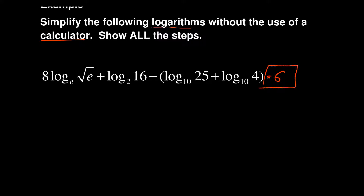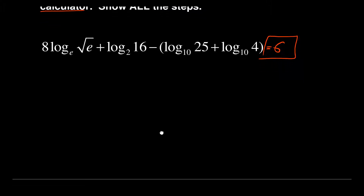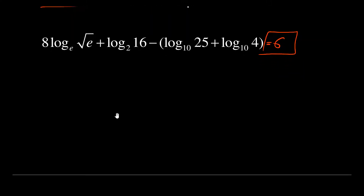So my aim is to get 6. Now let us work through this problem and see how to get that particular answer of 6. I'll start with the first part — the part before the plus sign — which is 8·log base e of the square root of e.